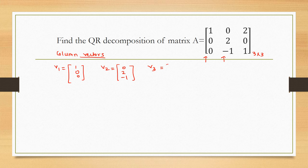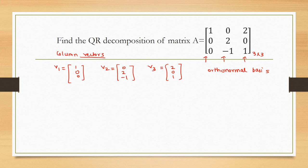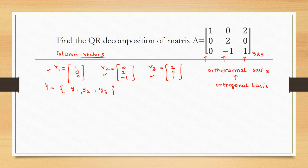Now you have to find the orthonormal basis, just like you did in the Gram-Schmidt process. To get the orthonormal basis, you first have to find the orthogonal basis using Gram-Schmidt. Because there are 3 column vectors, there will be 3 orthogonal basis vectors — let's call them Y1, Y2, and Y3. Y1 is always equal to the first column vector, which is V1 here. That is [1, 0, 0].